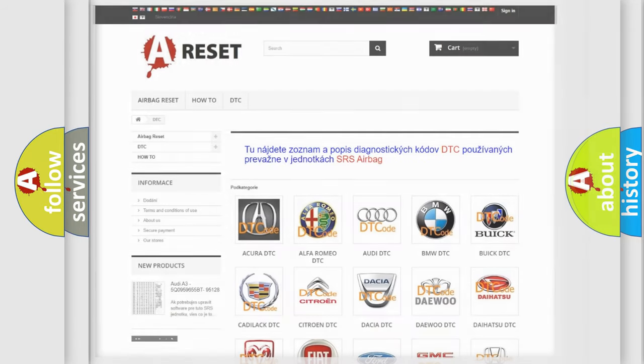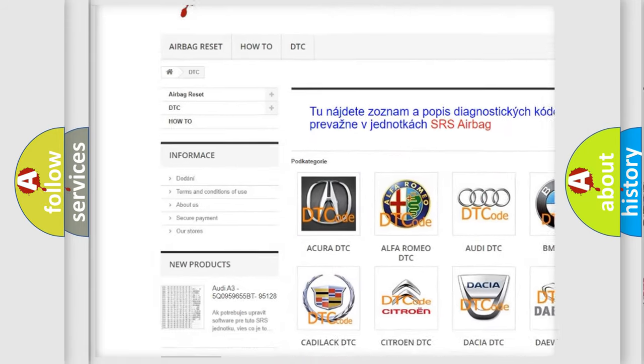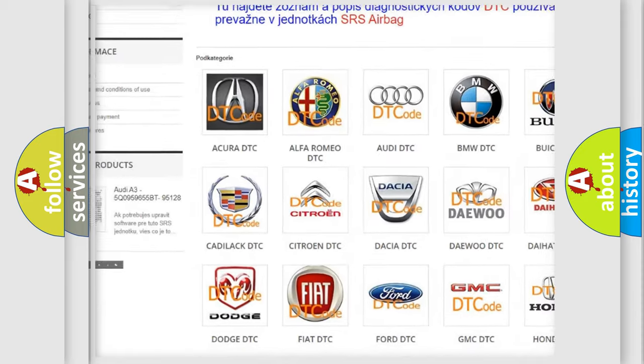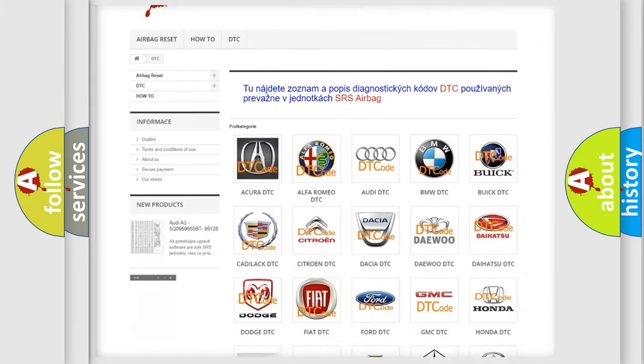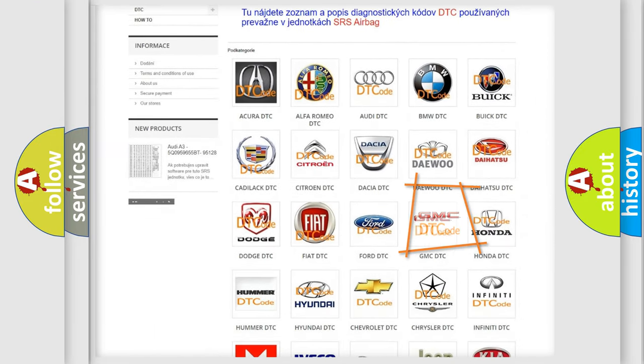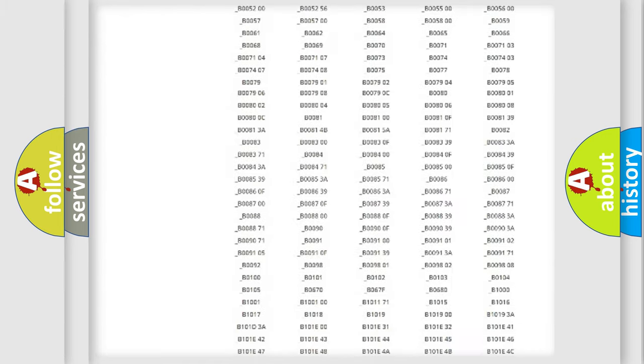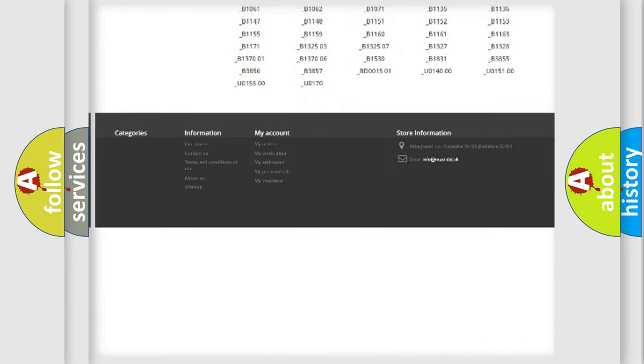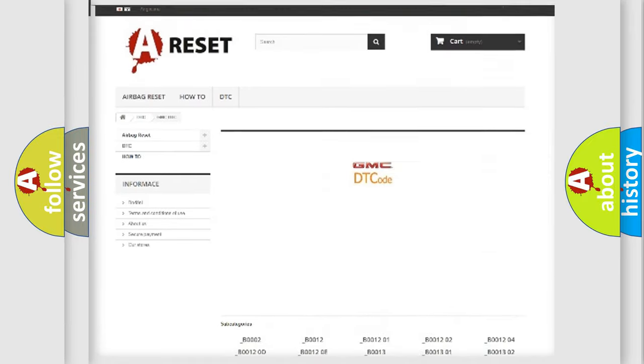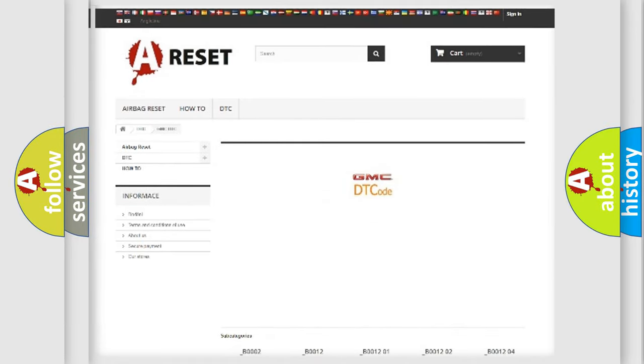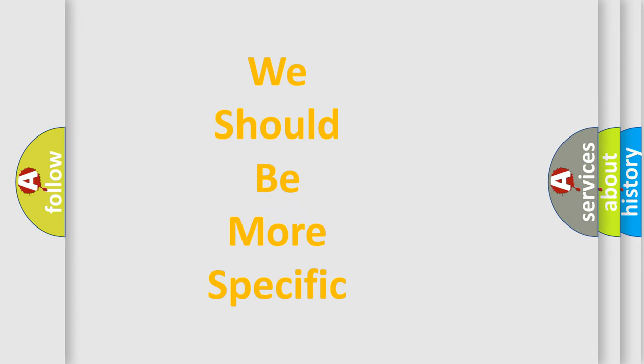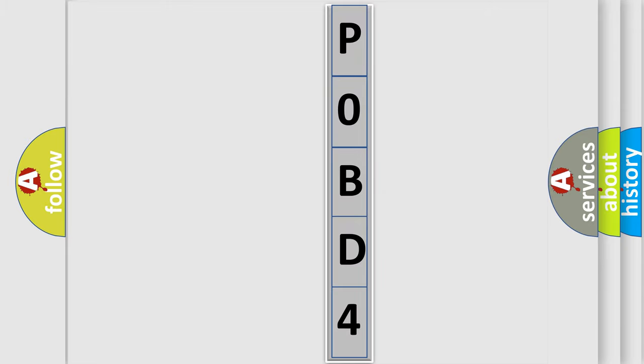Our website airbagreset.sk produces useful videos for you. You do not have to go through the OBD-2 protocol anymore to know how to troubleshoot any car breakdown. You will find all the diagnostic codes that can be diagnosed in GMC vehicles, and many other useful things. The following demonstration will help you look into the world of software for car control units.